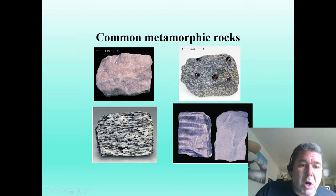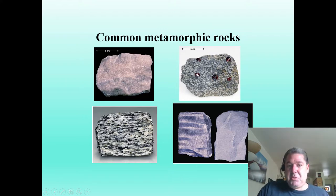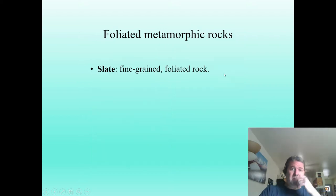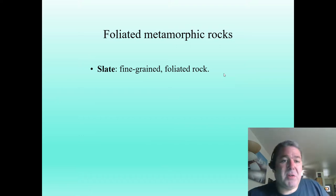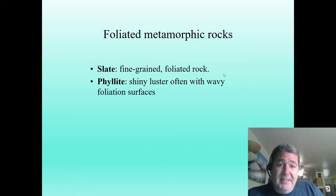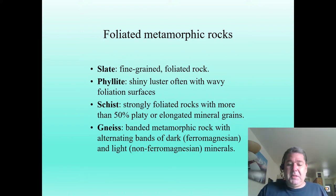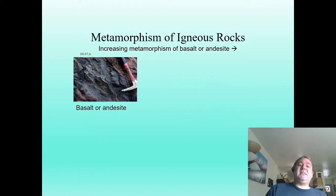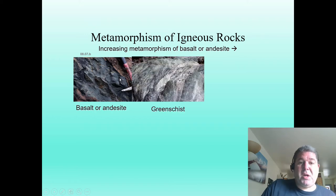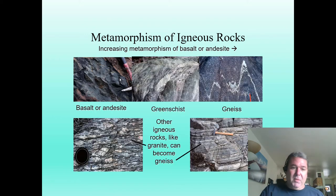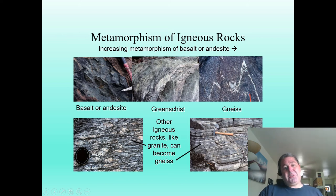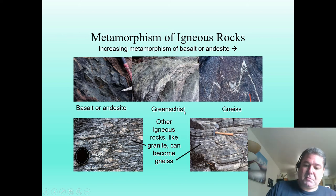Here are some common metamorphic rocks: marble, gneiss, phyllite, and schist — including a garnet schist, since garnets love to form dodecahedrons. The names of these metamorphic rocks match their textures: slate, phyllite, schist, and gneiss. Go past gneiss, and you end up back at an igneous rock. We can start from other parent rocks too — a basalt or andesite turns into a green schist and then gneiss; granite, already stable at high temperatures, needs just a bit more to become gneiss.